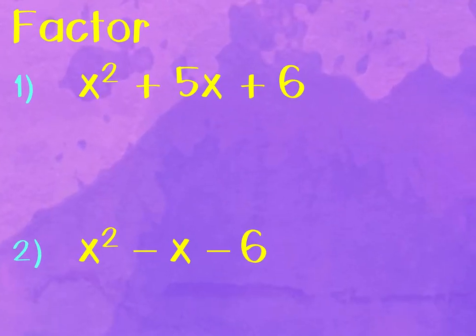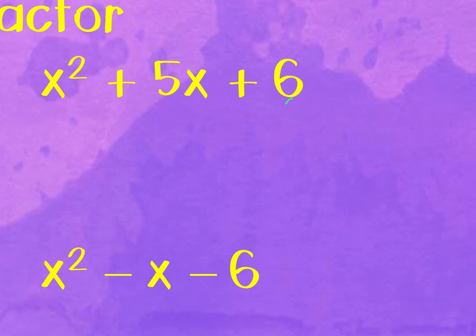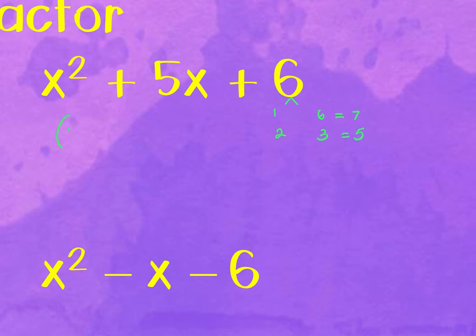For problem 1: no GCF, three terms, last term positive so both signs are positive. Factors of 6: 1 & 6 (sum 7), or 2 & 3 (sum 5). The middle term is 5, so we get (x + 2)(x + 3).